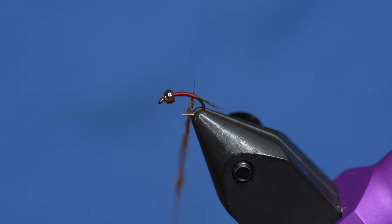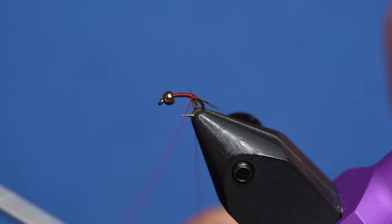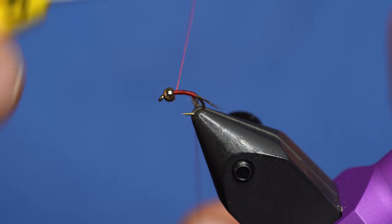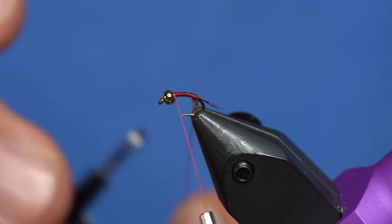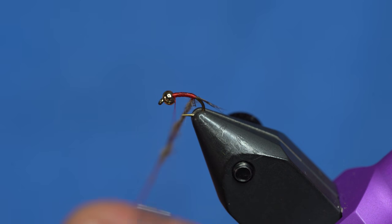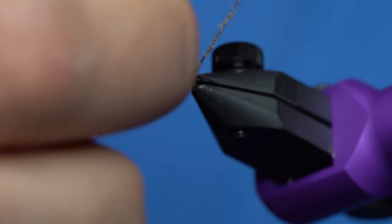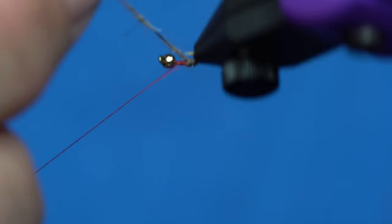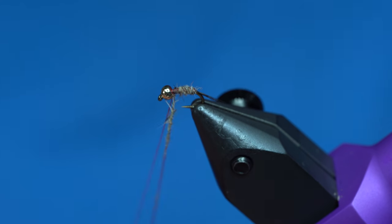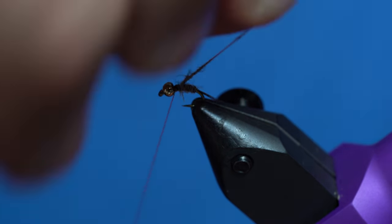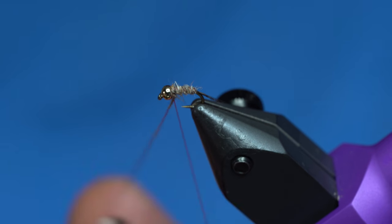Once I have the dubbing on there, I'm just going to close off my loop and bring my thread forward, and then twist it all up, just like that. I like to apply this using the rotary feature on the vise just because I have a little bit better control, and that will actually have a little bit of red showing through.